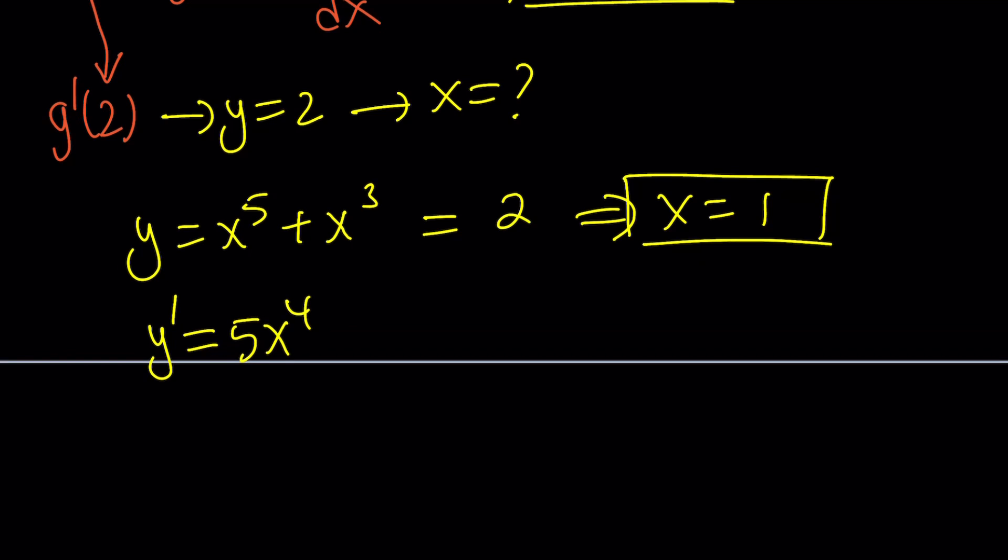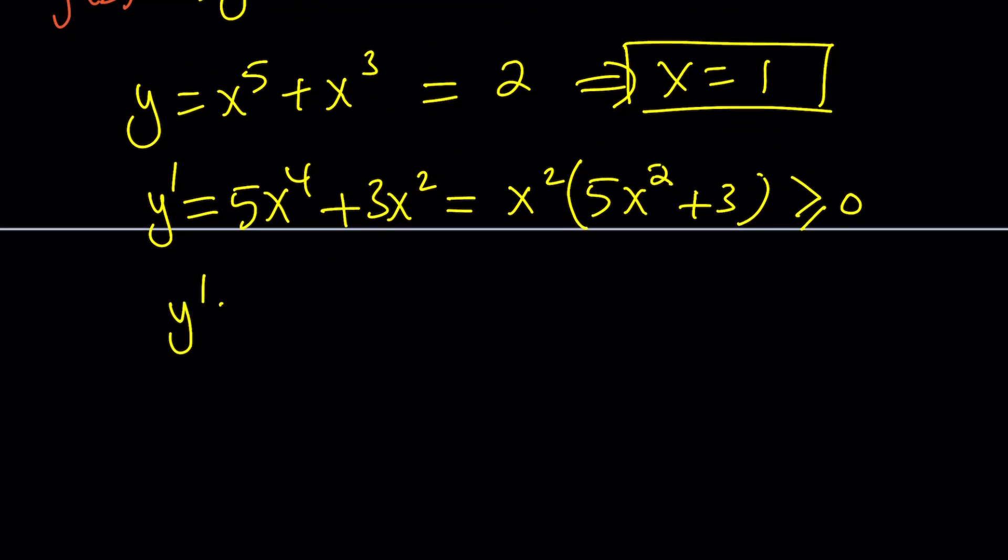Let's look at the first derivative one more time. This is going to be 5x^4 + 3x^2. If you take out x^2, this is x^2(5x^2 + 3). Now what do you notice? This expression is always positive, or I can say it's always greater or equal to 0, because at 0, it's 0. Otherwise, it's always positive. So y' is positive if x ≠ 0, and y' = 0 if x = 0.